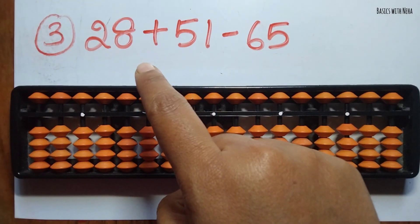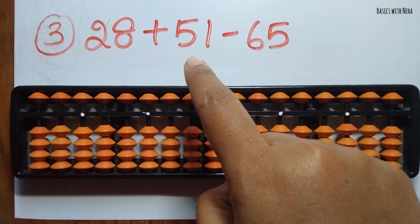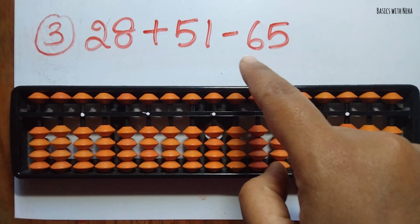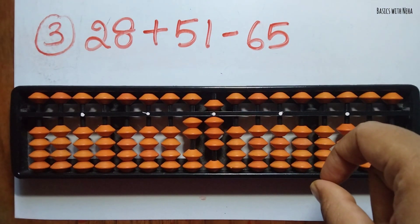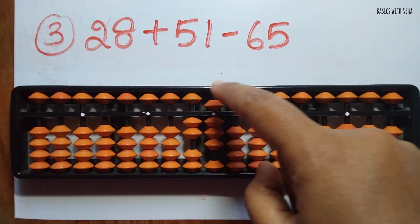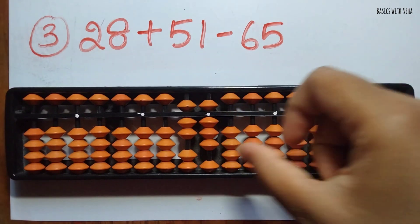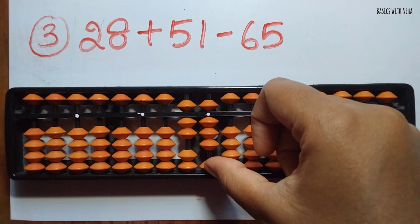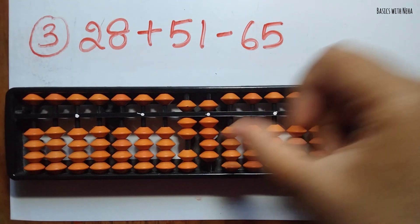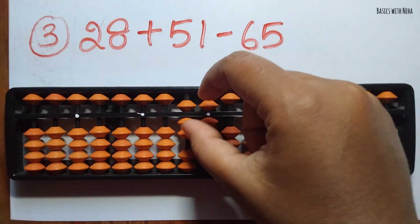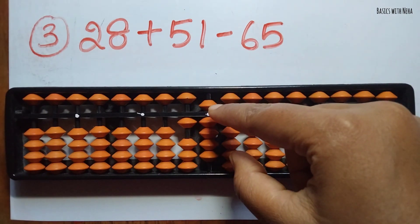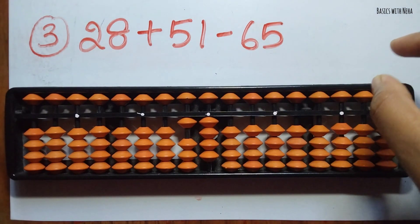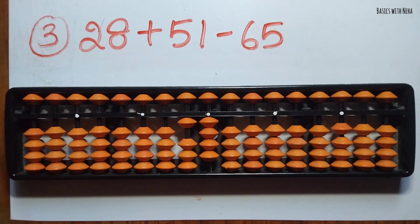The third question: 28 plus 51 minus 65. First take 28, now we should add 51 — 5 you can add directly, and 1 can also be added directly in the 1's rod. Now I should minus 65 — 6 can be minused in the 10's rod and 5 can be minused in the 1's rod. The answer is 14.